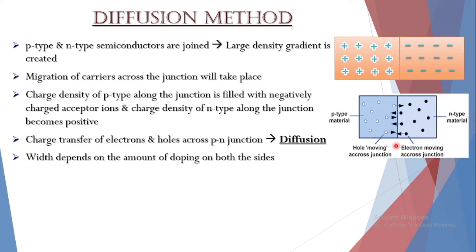The width of the P and N layers depends on how heavily each side is doped with acceptors and donors respectively. We will derive this expression in coming classes, but for now we can remember that the amount of doping decides the width of these P and N layers.